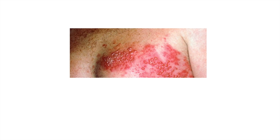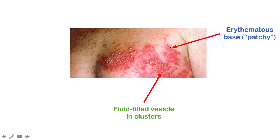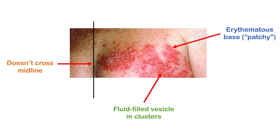Here's an image of the acute eruptive phase of shingles. As you can see, there are fluid-filled vesicles generally in clusters on top of an erythematous patchy base — not completely filled but patchy. And here's the midline of the individual. As you can see, the acute eruption doesn't cross the midline; it remains in one or more contiguous dermatomes and stops abruptly at the midline. These are very key indicators that this is shingles.